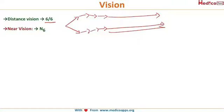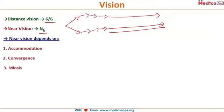As we go closer to an object, the rays become divergent. Normal near vision is N6, and its components are accommodation, convergence, and miosis — all three together constitute near vision.